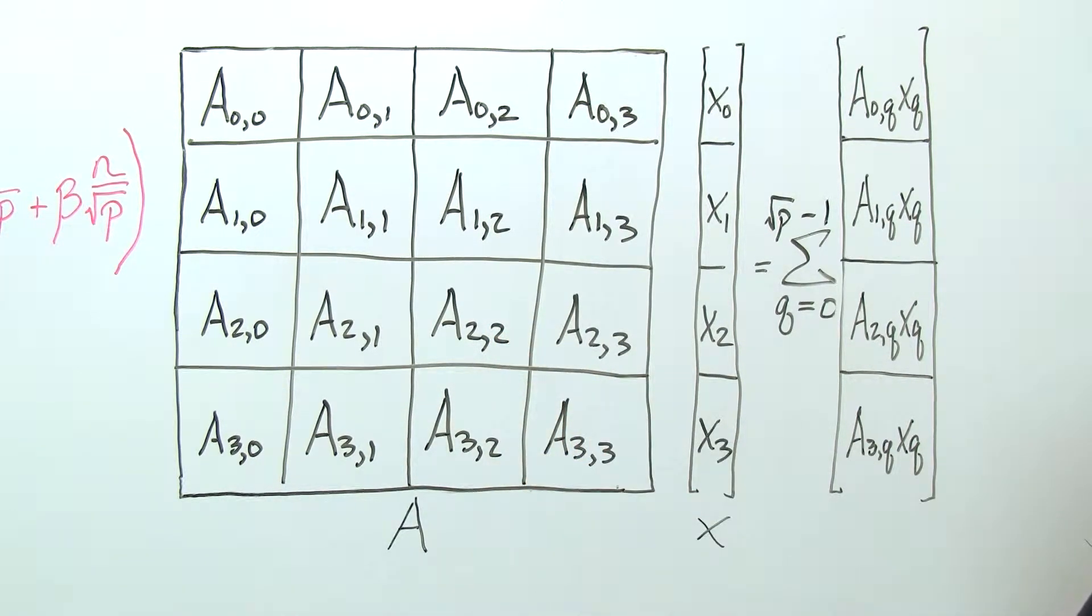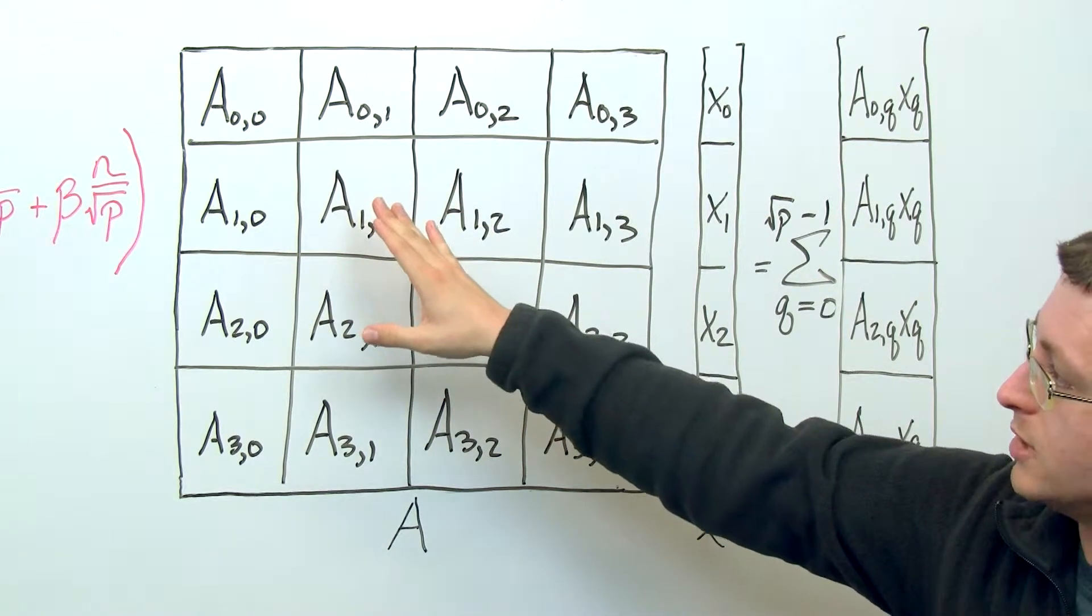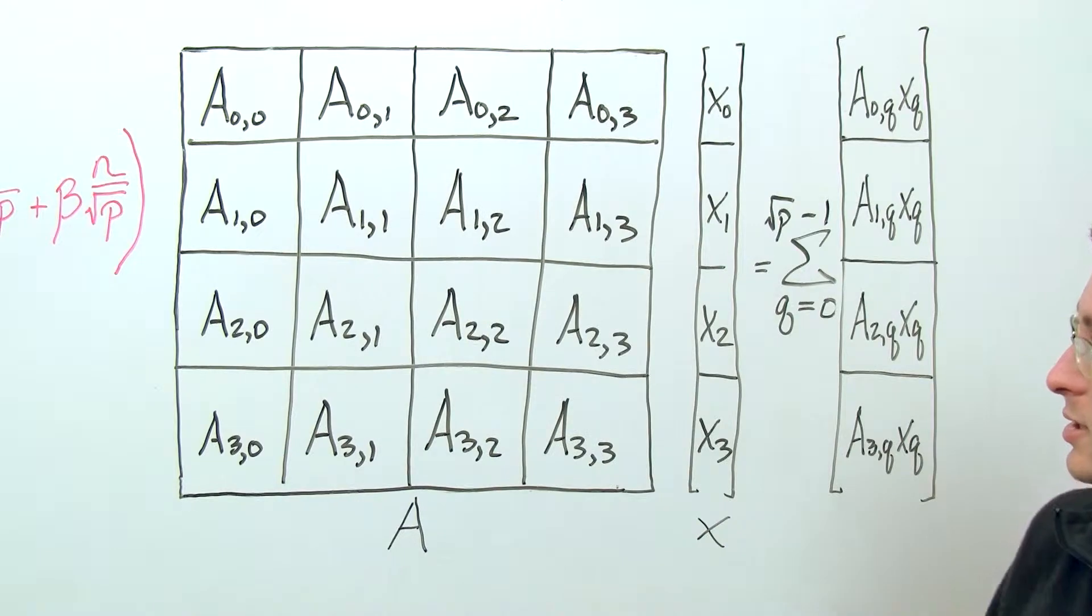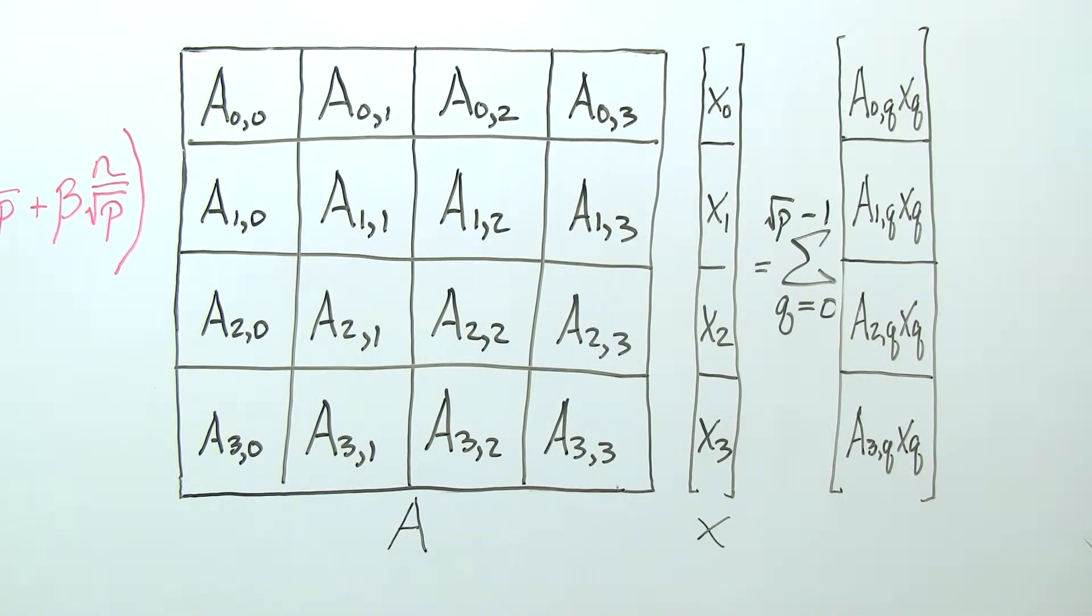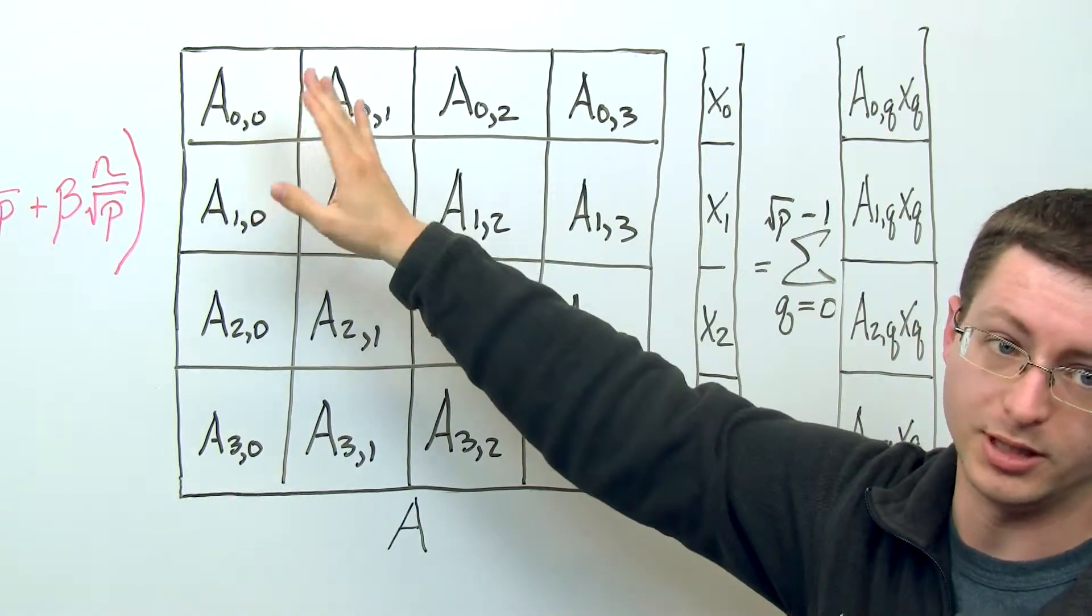So if we think of taking 16 processes and putting them into a 4x4 grid, then we could think of assigning to each one of these processes one of these submatrices of A. In particular, we're going to focus on what, say, the process in the top left of this grid would need to compute.